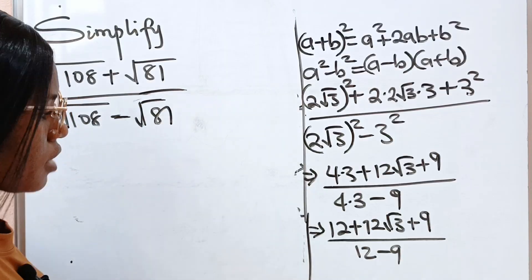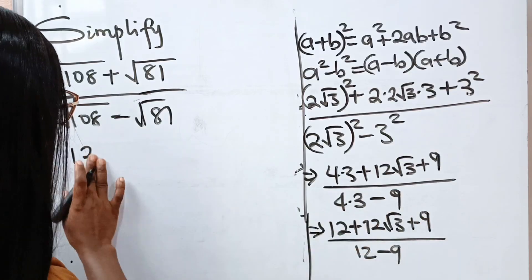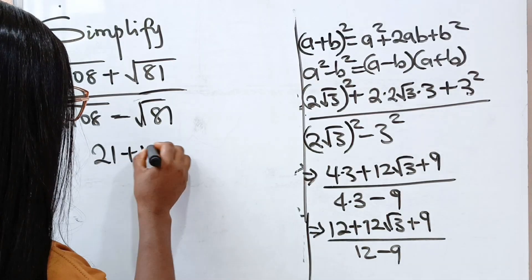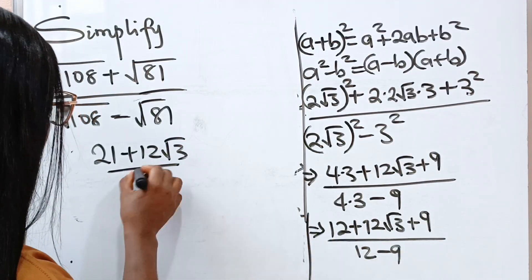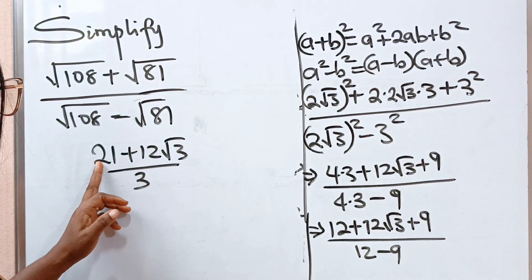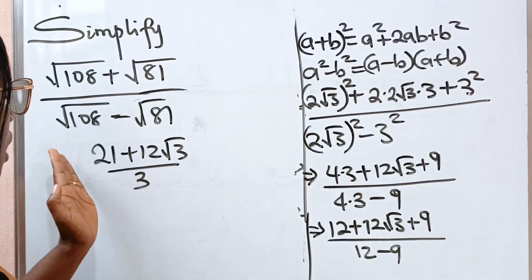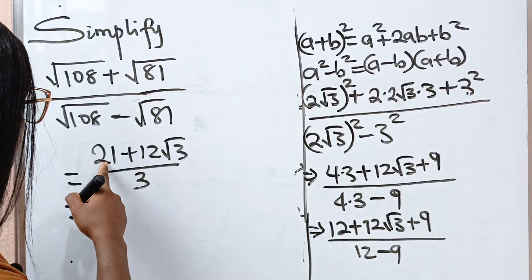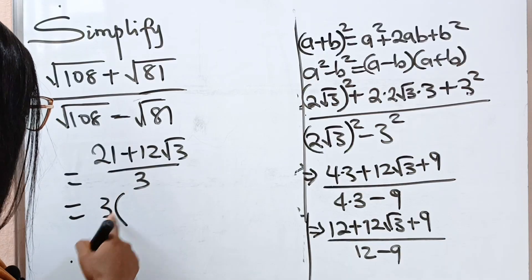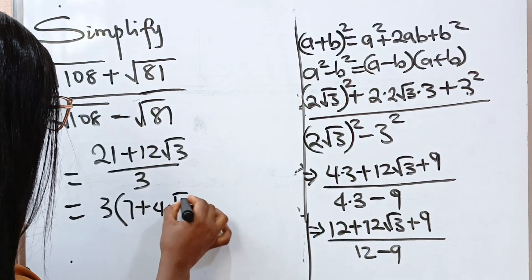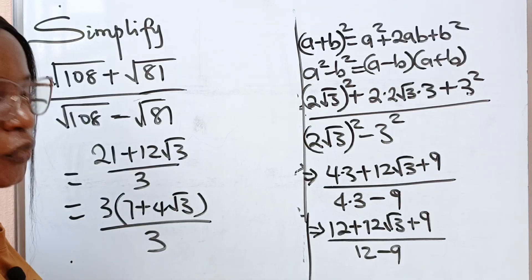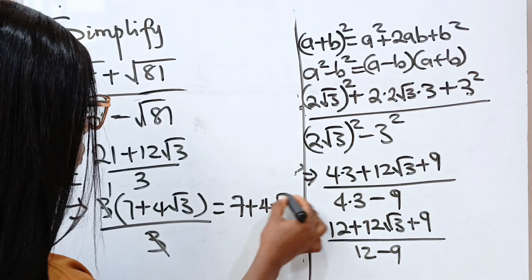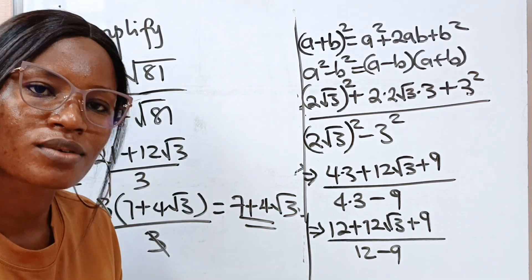So this is minus root 81. Continuing: 12 plus 9 gives us 21, so we have 21 plus 12 root 3 divided by 12 minus 9, which gives us 3. Now since 3 is a common factor, let's factorize it out. 21 divided by 3 is 7, and 12 divided by 3 is 4. Now 3 divides itself and we have 1, so the result is 7 plus 4 root 3. This is the final answer without a calculator.